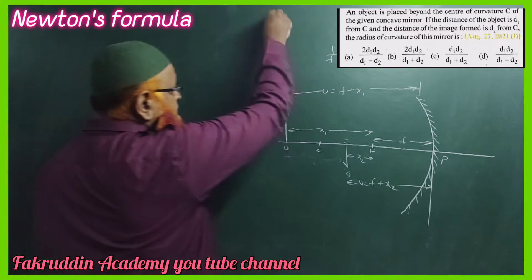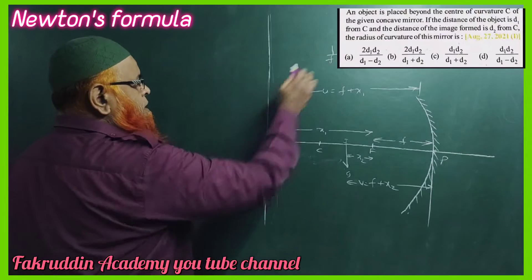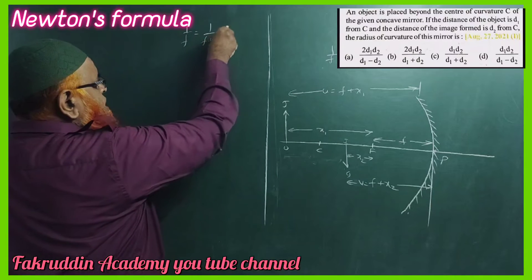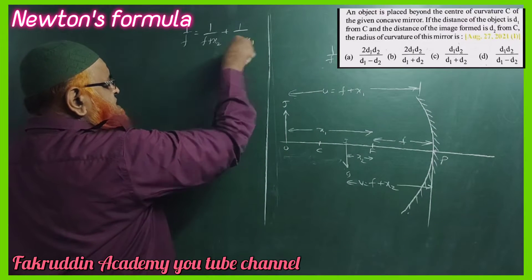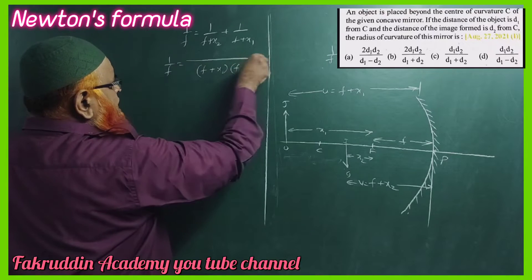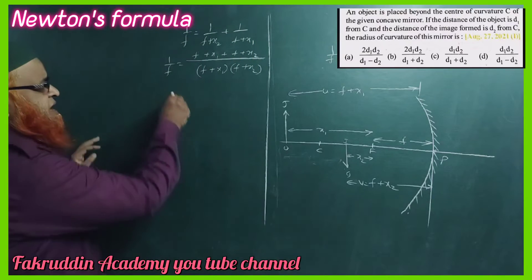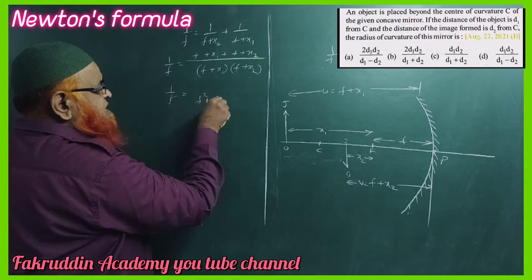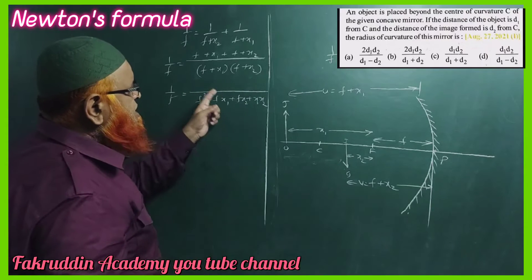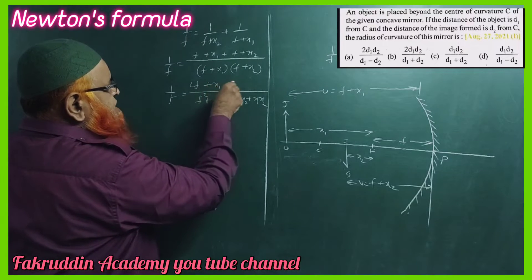Now substituting into the mirror formula: 1/f = 1/v + 1/u, where v is f plus x2 and u is f plus x1. Taking the LCM, we consider the product (f + x1)(f + x2) in the denominator, and (f + x1) + (f + x2) in the numerator, which simplifies to 2f + x1 + x2.